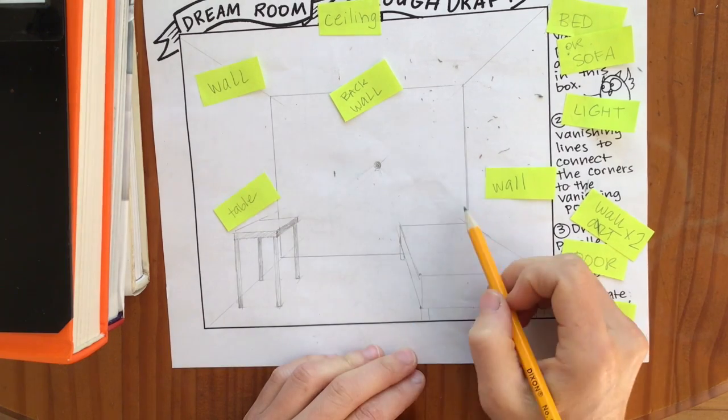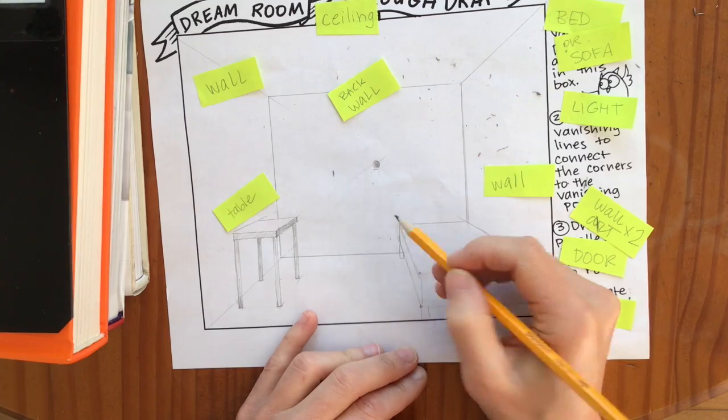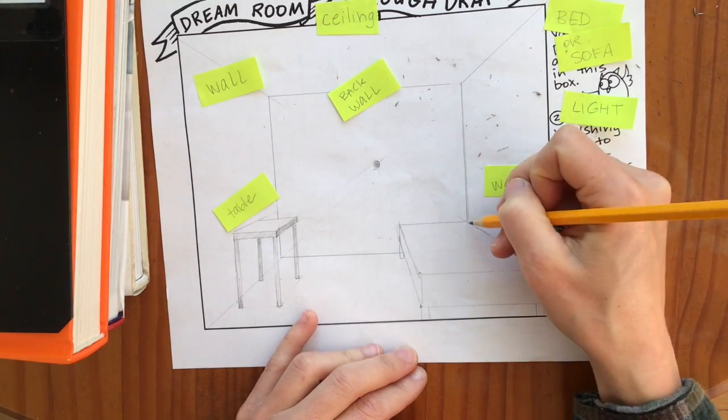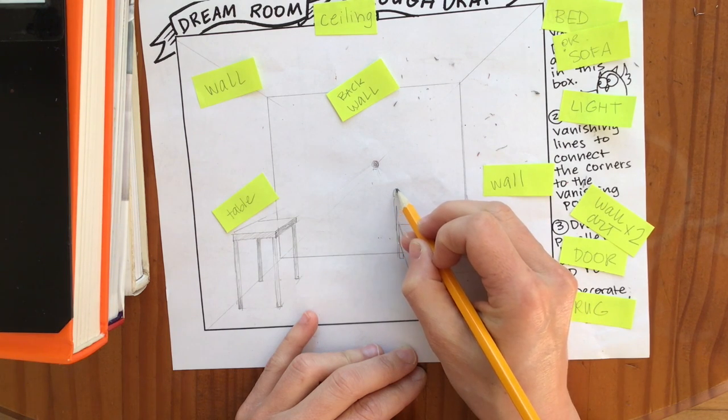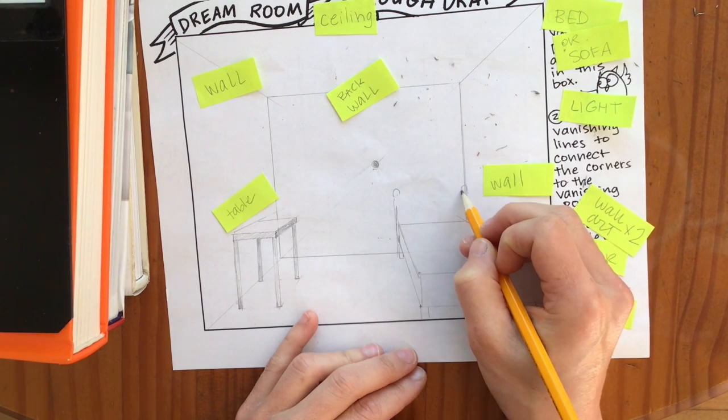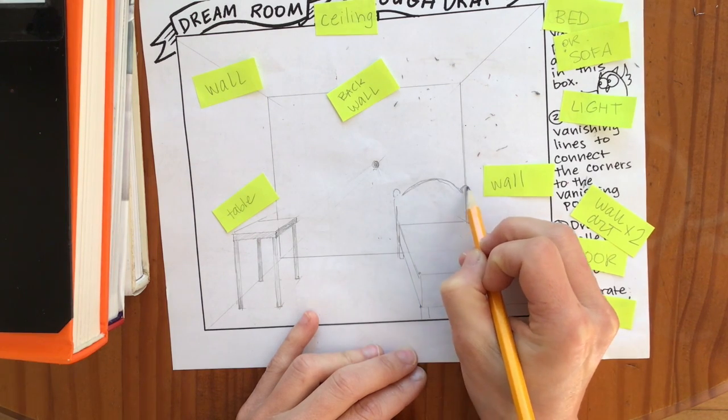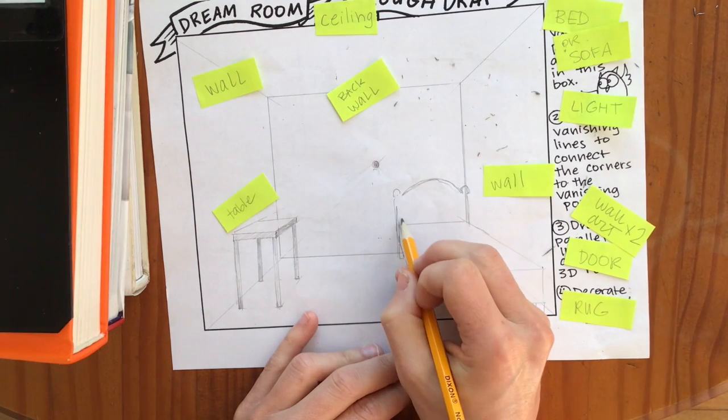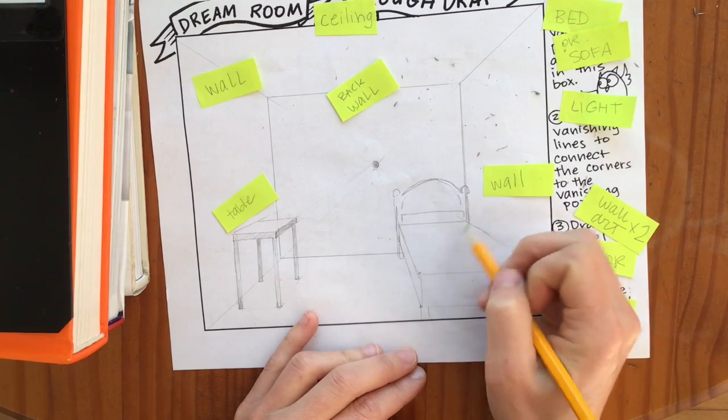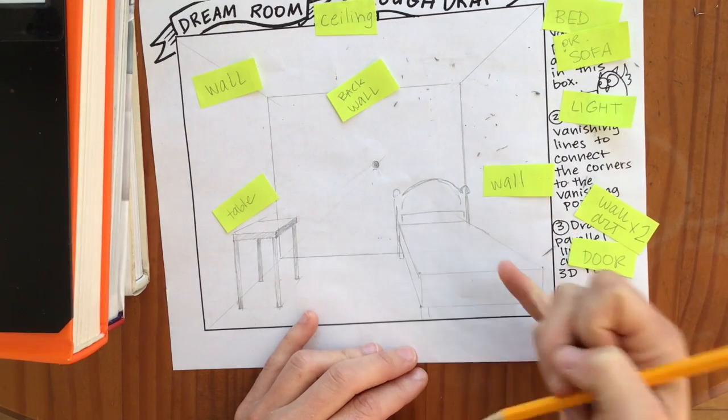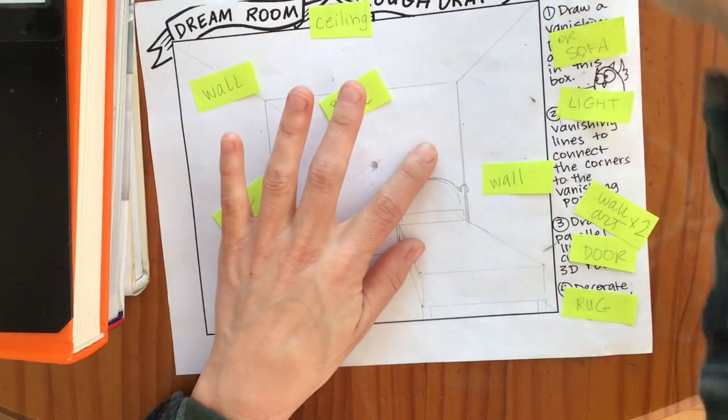If you wanted to add a headboard you could. Maybe I'll do one right now so you can see what that might look like. Straight up. And put some fancy little knobs on it. And maybe it's got one of these. Your bed can look like whatever you want it to look like. I am just designing mine. In a minute you can add all your pillows and blankets that you want. So there is now my bed.